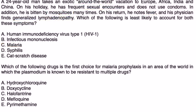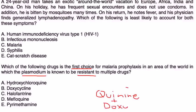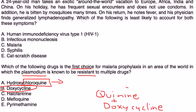Vignette two: Which drug is first choice for malaria prophylaxis in an area where plasmodium is resistant to multiple drugs? When you have resistance, the choices include quinine and doxycycline. Chloroquine or hydroxychloroquine is given when you are in chloroquine-sensitive areas.